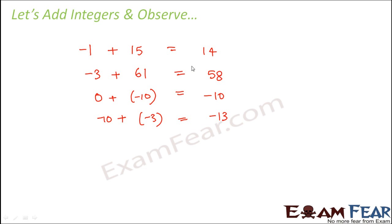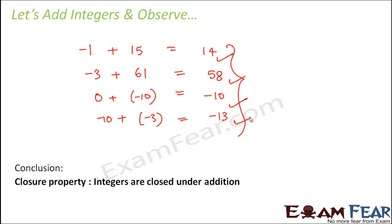In each of these, what do we see? Whether we take a positive and negative integer, positive and positive, negative and negative, or 0 with some integer — every time we get an integer. So every time the result is an integer. This proves that integers are closed under addition. When you add integers, you always get integers — any two integers added will give you an integer. This is called closure property.